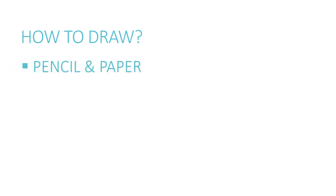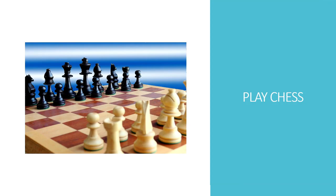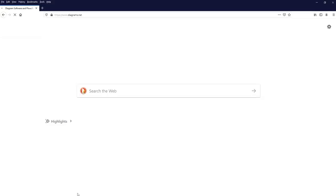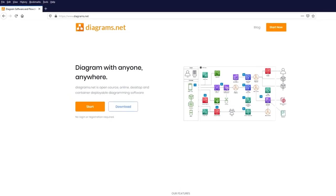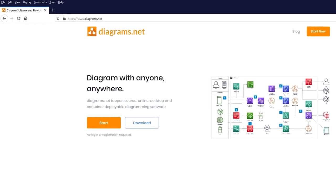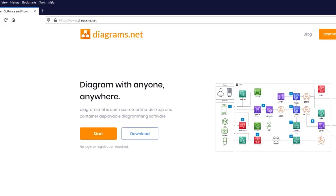How to draw a flowchart: It can be drawn with pencil and paper, a whiteboard and marker, or any software which has a drawing feature. Now let's draw a flowchart of playing chess using a free drawing software called Diagrams.net. Open your favorite web browser and enter the address www.diagrams.net. You can also find the URL in the description below.